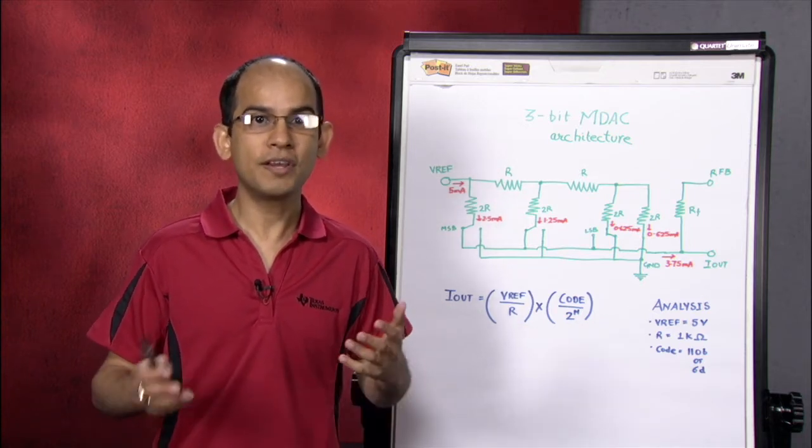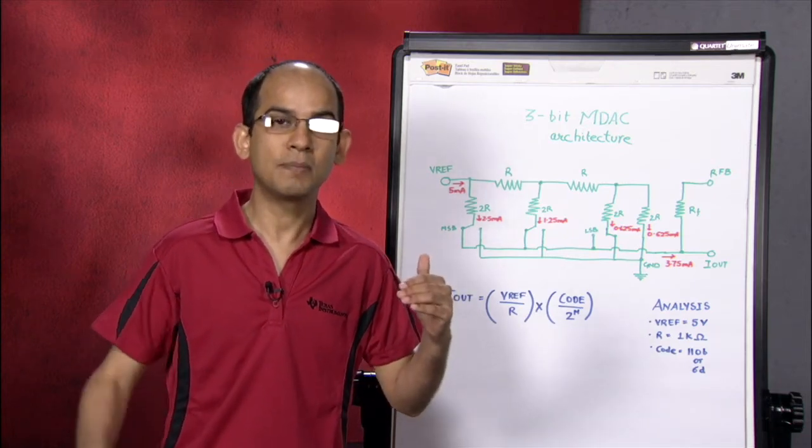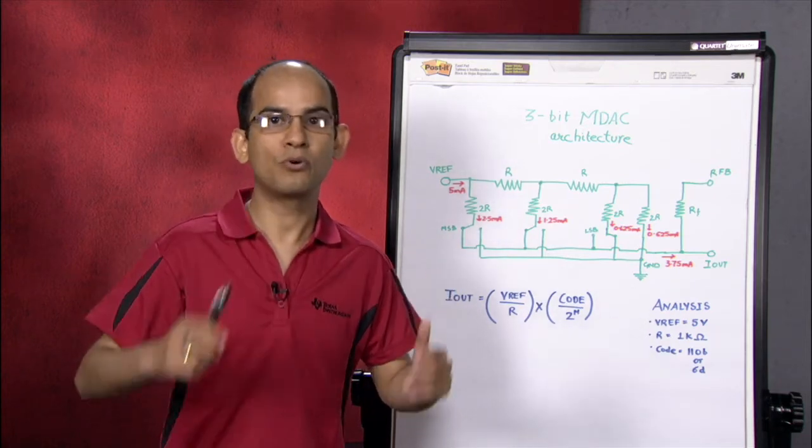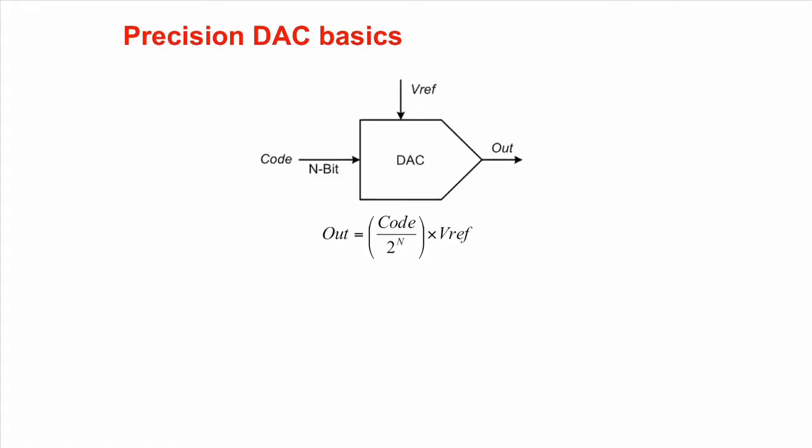By definition, every DAC is a multiplying DAC. The input code is multiplied by the reference to produce an output. So why aren't all the DACs MDACs? Well, the difference lies in how much the VREF can vary and what kind of output the output pin provides.